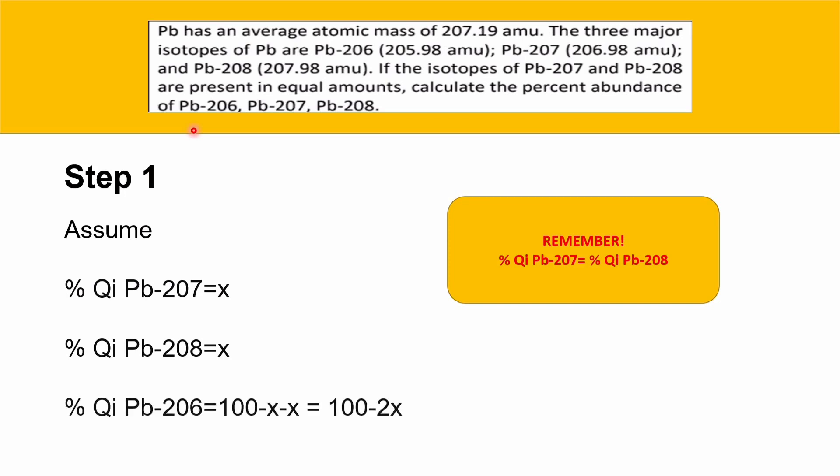So we can also find the isotopic abundance for Plumbum-206, which is 100 minus 2x. The 100 comes from the fact that the total isotopic abundance for all isotopes is 100%. So 100 minus x minus x is the same as 100 minus 2x.